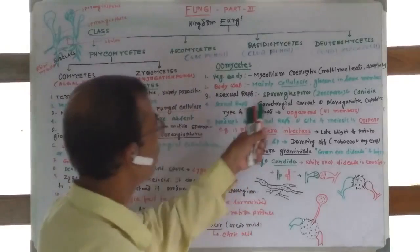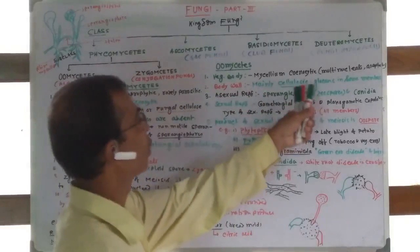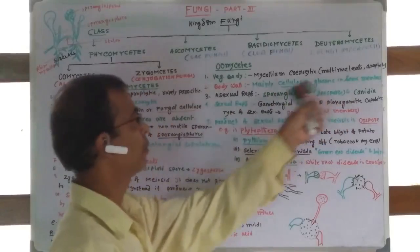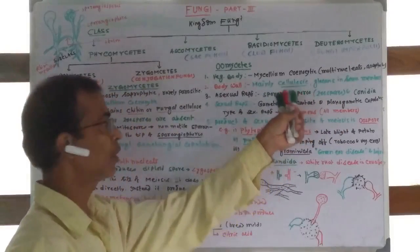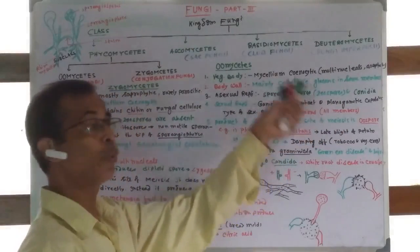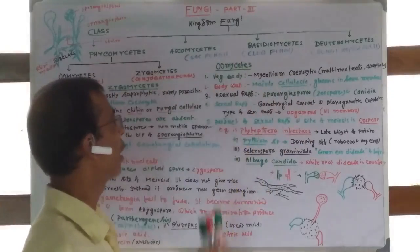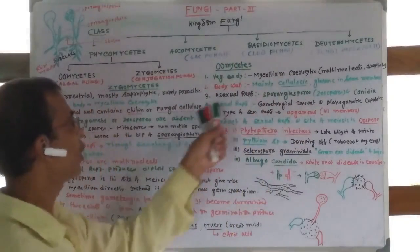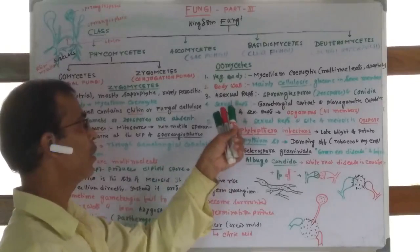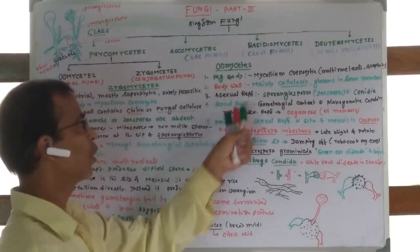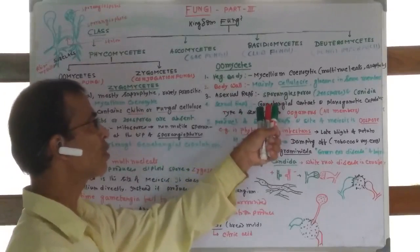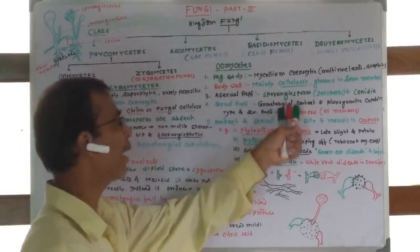The body wall mainly contains cellulose and glucans in some members. This shows similarity with algae, so they are called algal fungi.